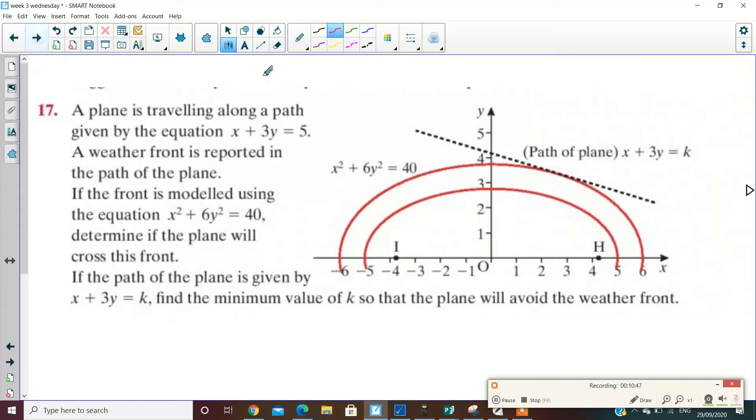Now, this one. A plane is traveling along a path given by the equation x plus 3y equals 5. A weather front is reported in the path of the plane. The front is modeled using x squared plus 6y squared equals 40. Determine if the plane will cross this front. If the path of the plane is given by x plus 2y equals k, find the minimum value of k so the plane will avoid the weather front.